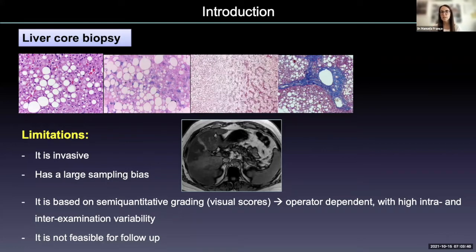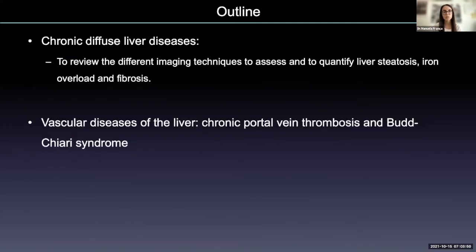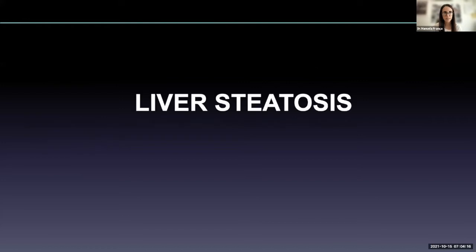Nowadays, imaging plays an important role in the evaluation of the liver parenchyma, and this will be the focus of my session. In this session, we will review chronic diffuse liver diseases and the different imaging techniques to assess and quantify liver steatosis, iron overload, and fibrosis. We will also briefly review some vascular liver diseases that can resemble liver cirrhosis because of the morphological and parenchymal changes of the liver.